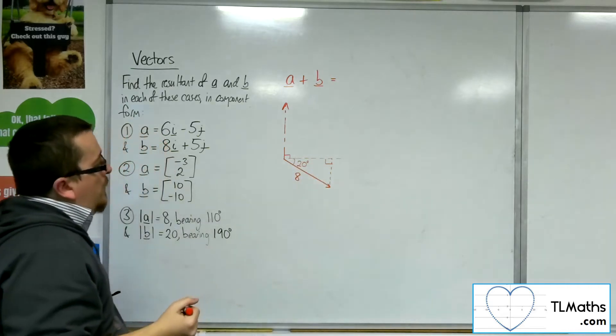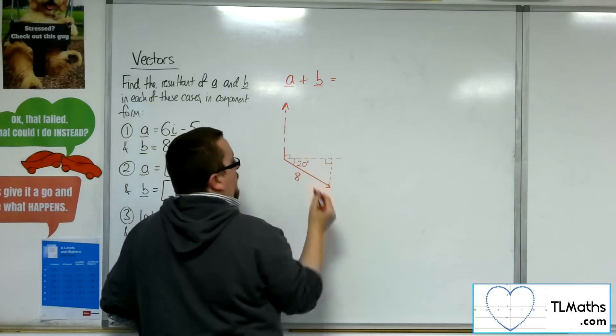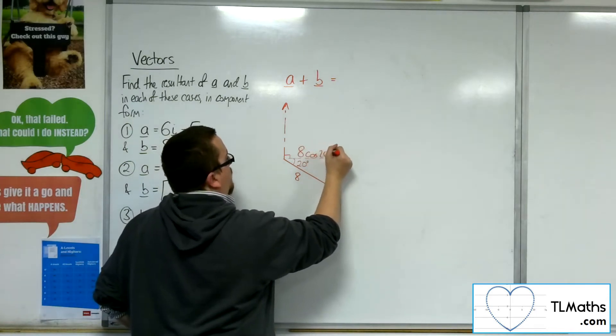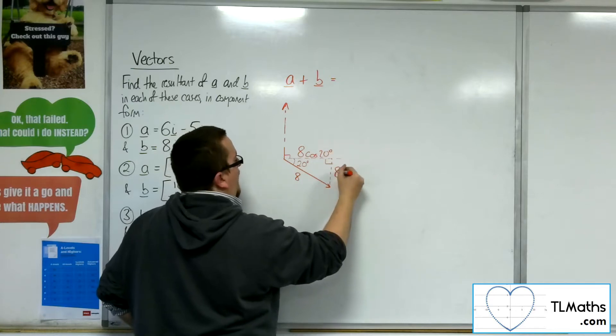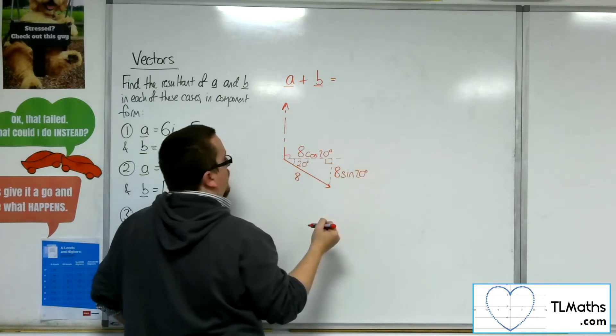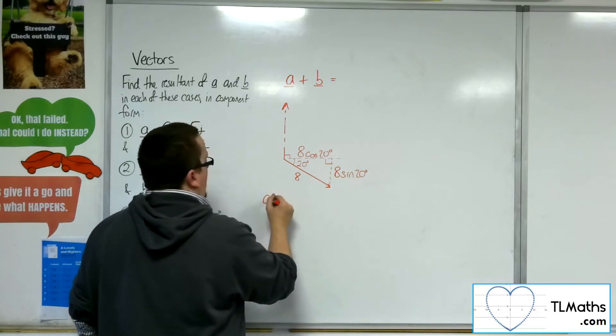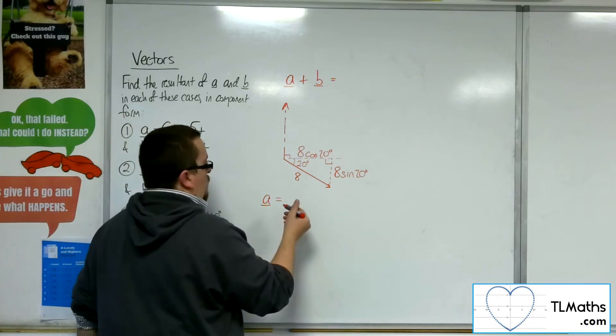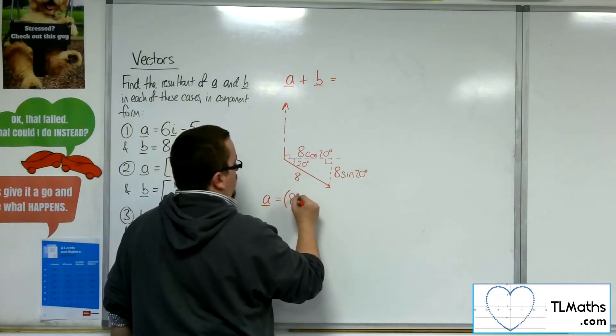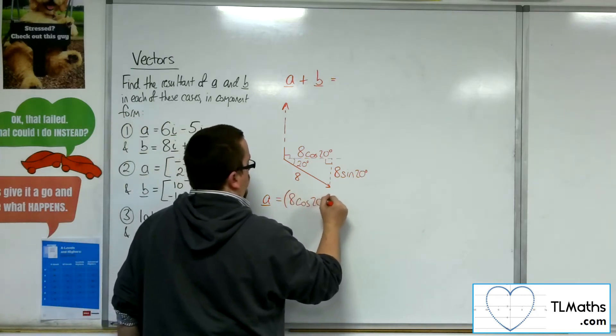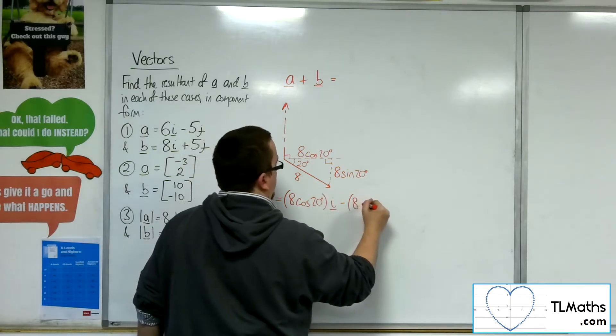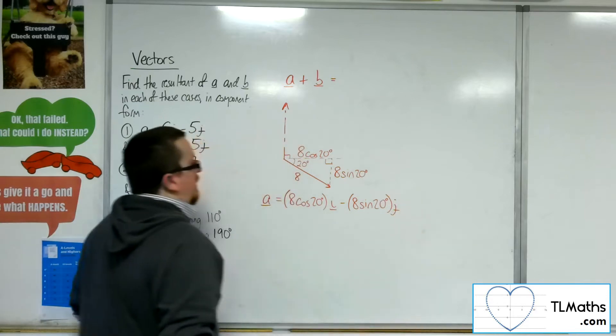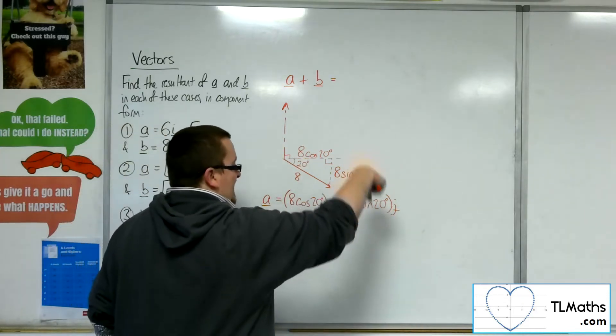So the adjacent side would be 8 cosine of 20. So that means that a is going to be equal to, well, I'll write it out in full, 8 cosine 20 degrees i take away 8 sine 20 degrees j. Because we're going along the 8 cosine 20.